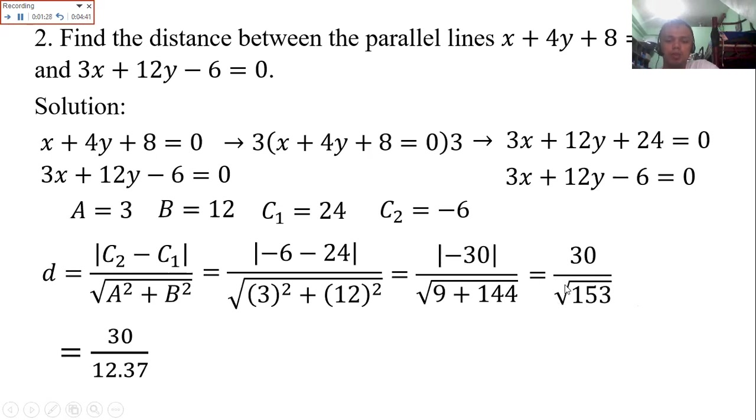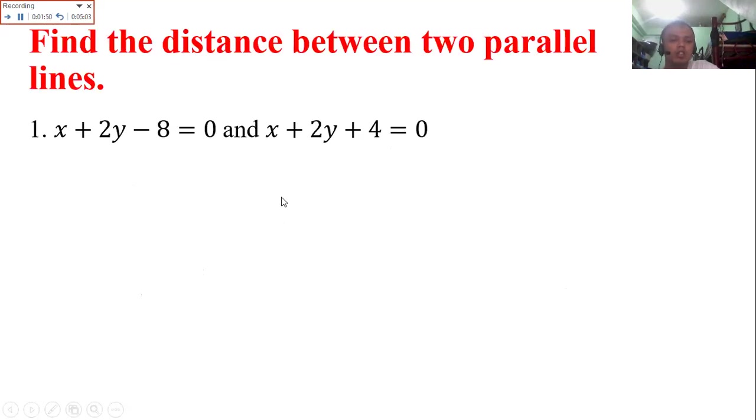Shortcut method: Get the approximate value of the square root of 153. That becomes 12.37 using your calculator. Check it. Then 30 divided by 12.37 equals 2.4 units. This is an approximate value. When we say approximate, it's not exact, so we have some rounding.